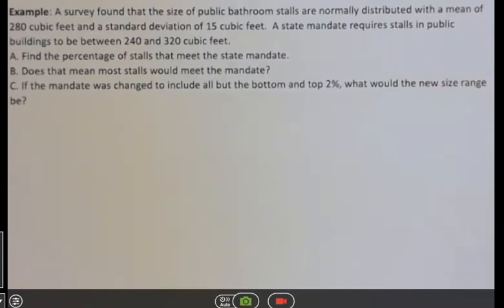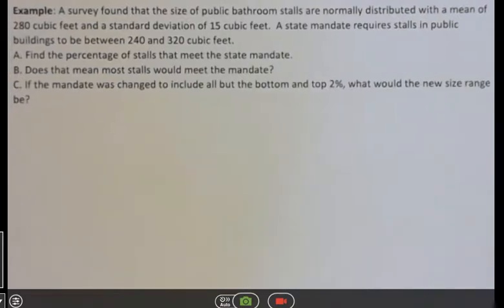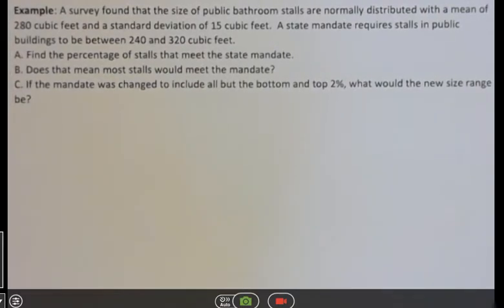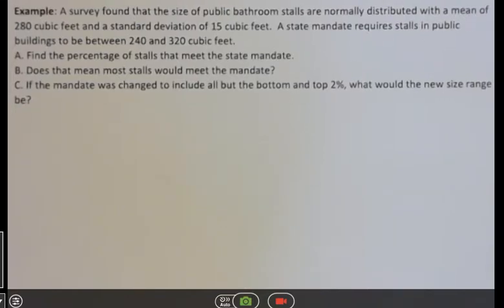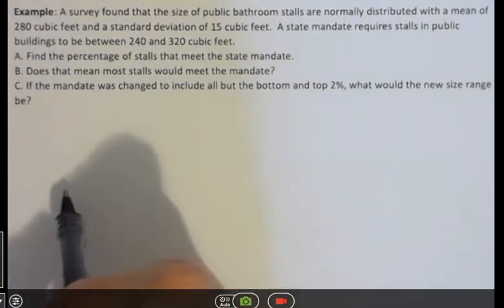So here it is. A survey found that the size of public bathroom stalls are normally distributed with a mean of 280 cubic feet and a standard deviation of 15 cubic feet. A new state mandate requires stalls in public buildings to be between 240 and 320 cubic feet. Find the percentage of all stalls that meet the state mandate. This is a new state mandate, I should say.